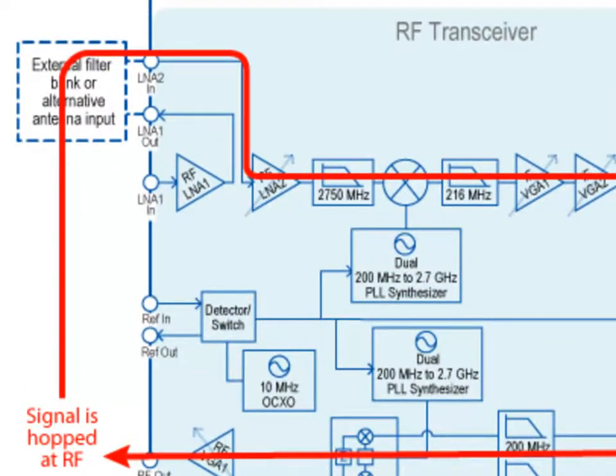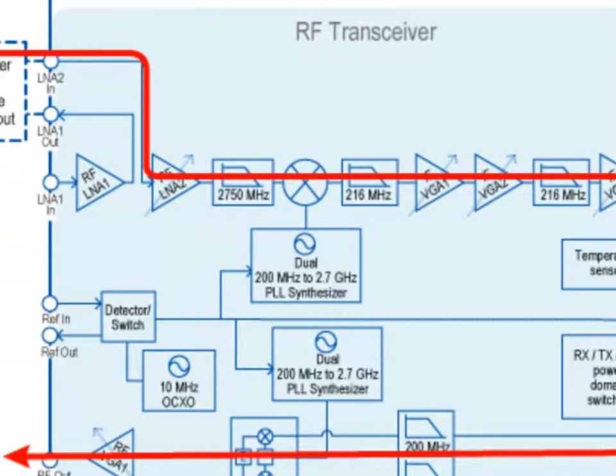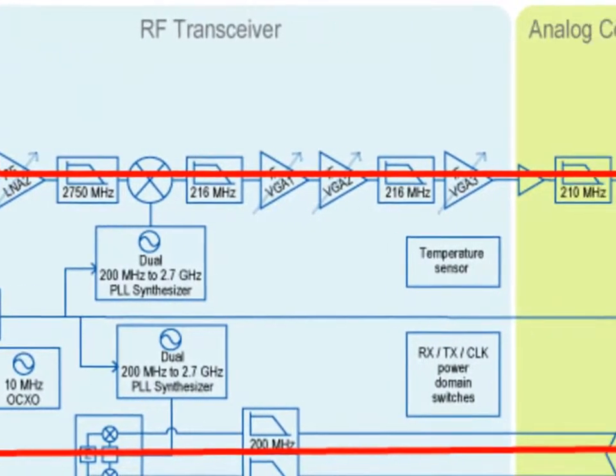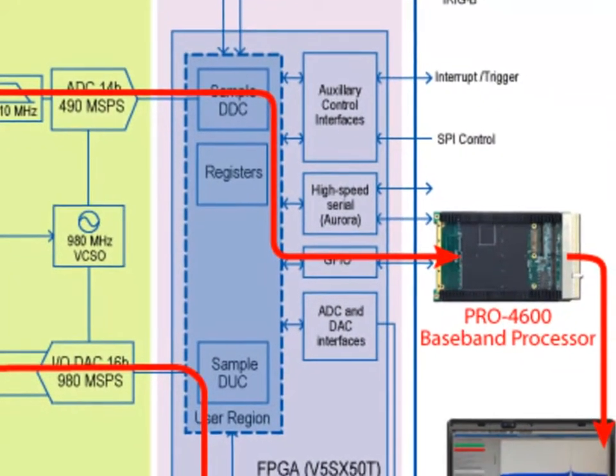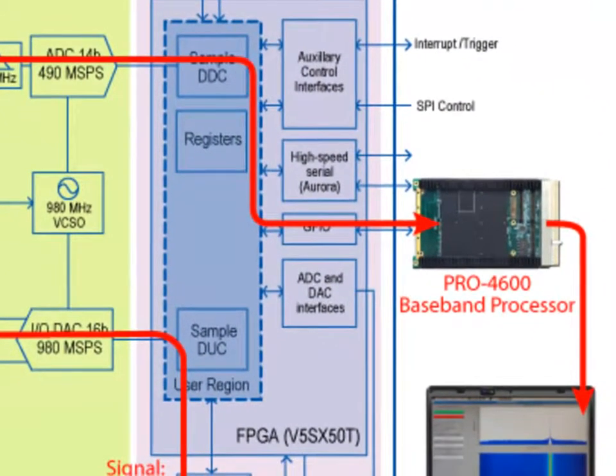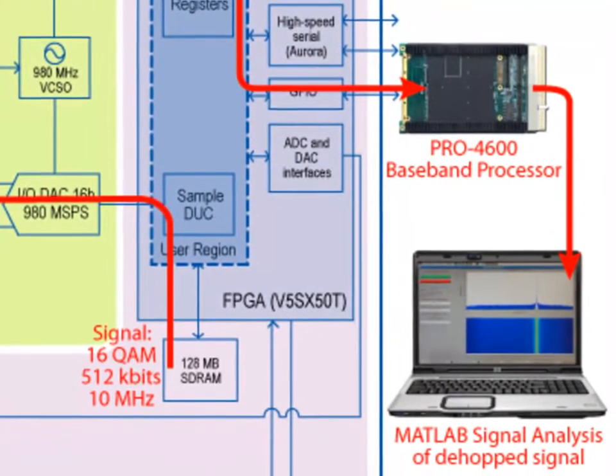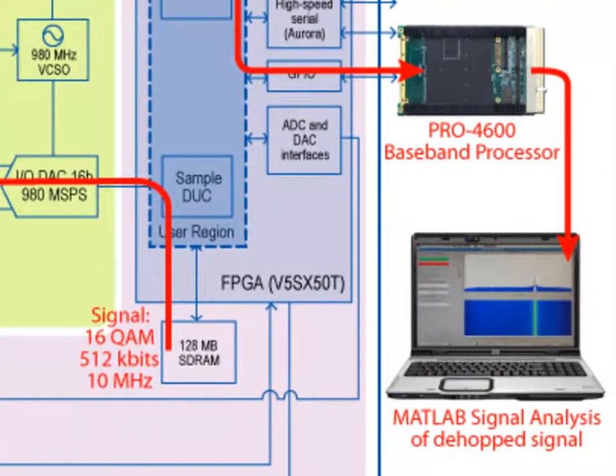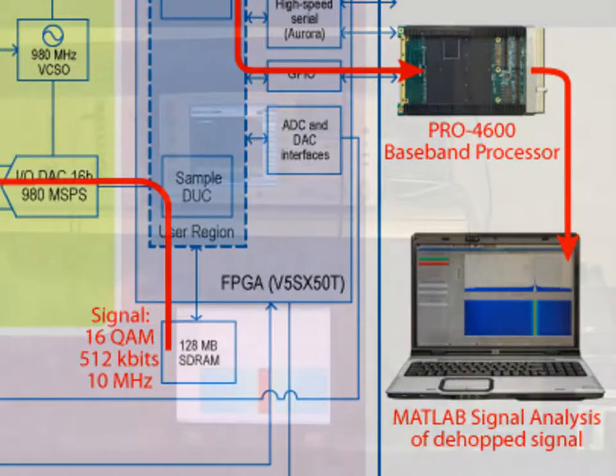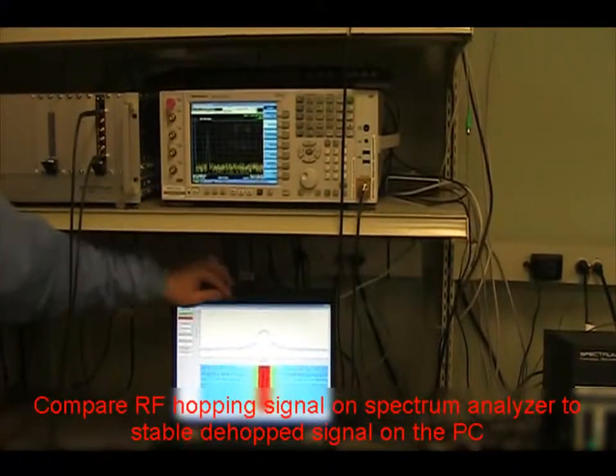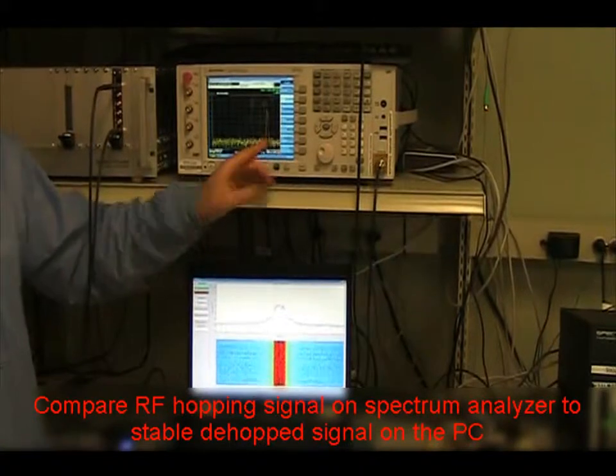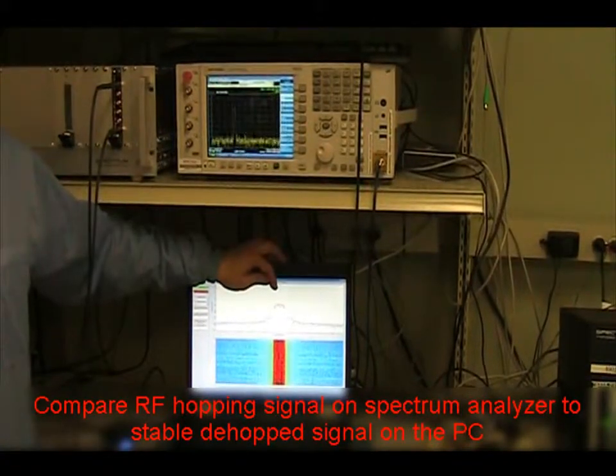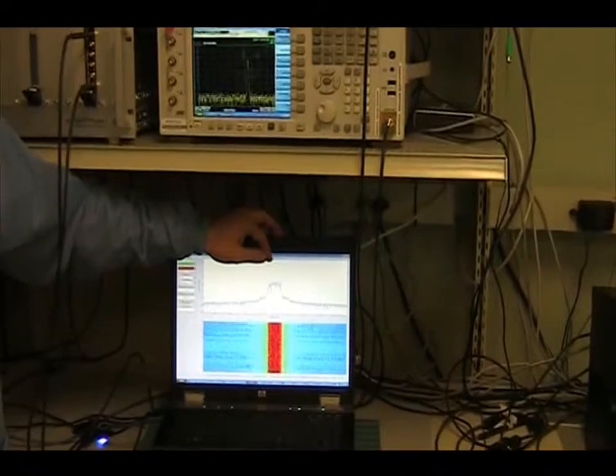We're also looping the same signal back through the splitter, through some attenuation, back into the RF4902's receiver stage where it's de-hopped in the RF stage. It's digitized in the high-speed ADC, sent through the FPGA, and put through a digital down-converter to baseband. We then send the baseband signals through the Pro4600 and Ethernet to the PC where we're running MATLAB to do spectrum analysis on the received signal. You can see the signal is de-hopped—it's scanning on the spectrum analyzer at RF but stationary in frequency for the signal that's come through the receiver and been de-hopped.